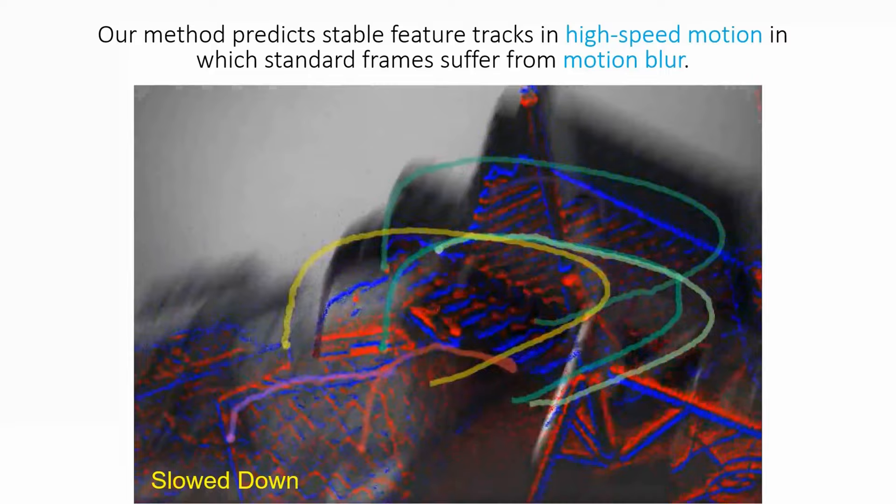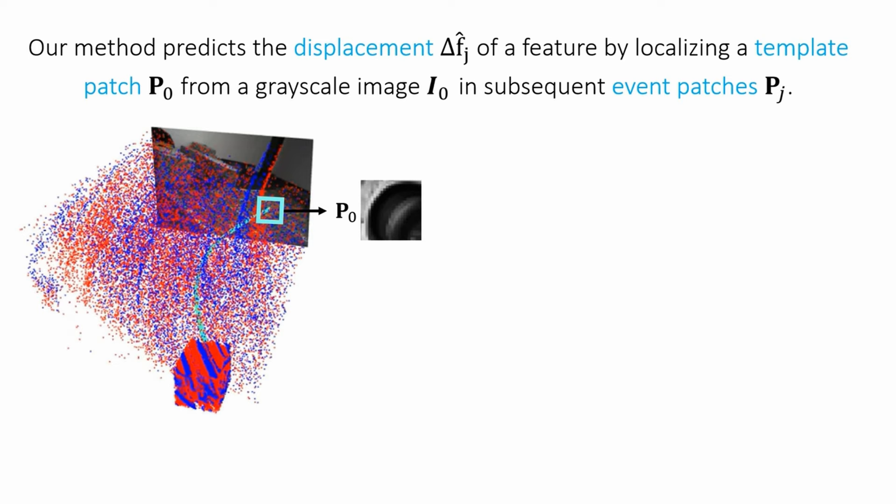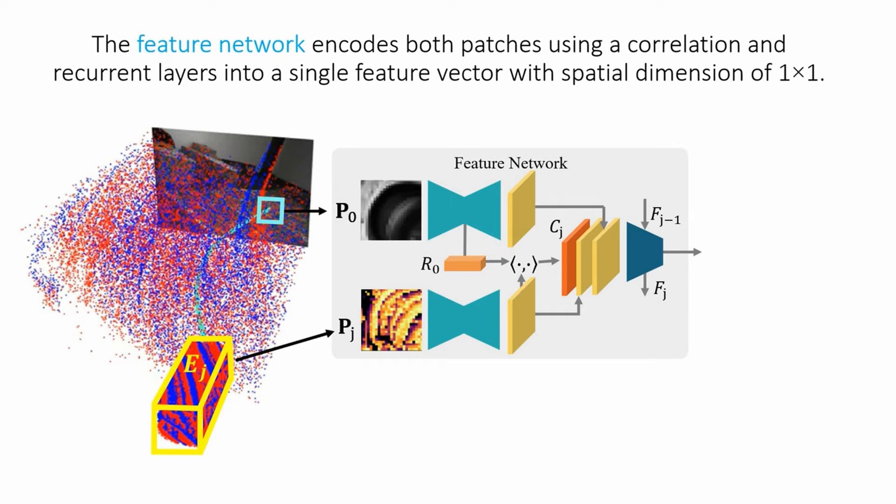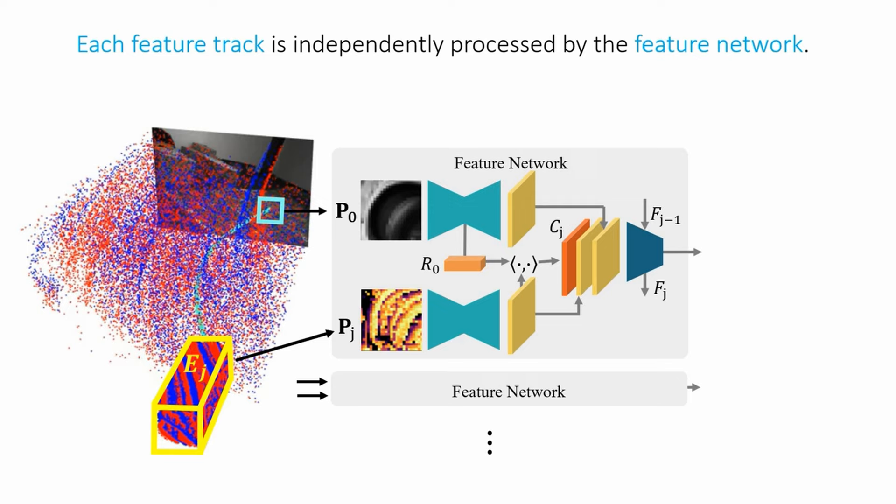Our method predicts the displacement of a feature by localizing a template patch P0 from a grayscale image in subsequent event patches PJ. Our method encodes both patches with a feature network into a single feature vector with a 1x1 spatial dimension. This encoding is done for each feature track independently.